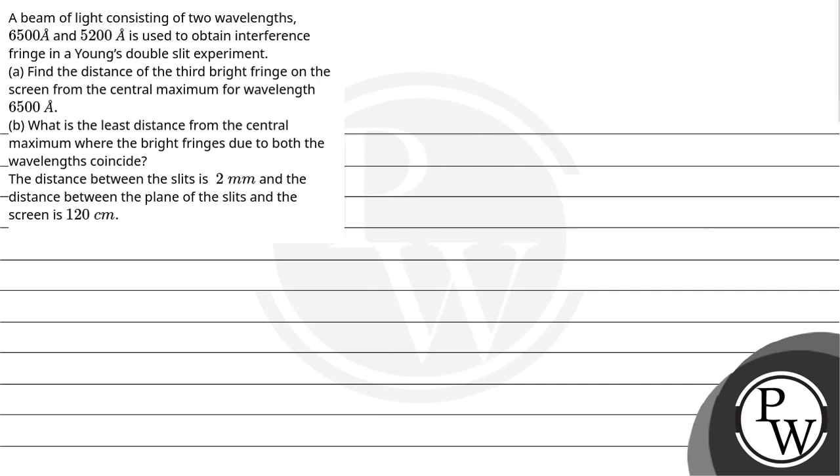Let's read the question. A beam of light consisting of two wavelengths, 6500 angstrom and 5200 angstrom, is used to obtain interference fringe in Young's double slit experiment.